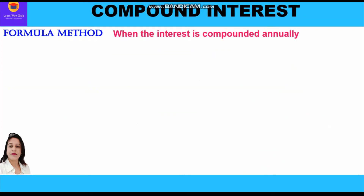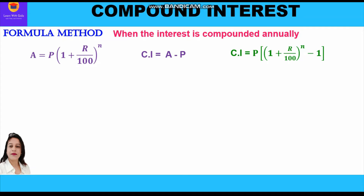Before starting with the solution, let us revise the formulas we are going to use. When interest is compounded annually, the amount formula is: A = P(1 + r/100)^n. Compound interest is the difference between amount and principal, so CI = A − P. The direct formula for CI is also: CI = P[(1 + r/100)^n − 1].